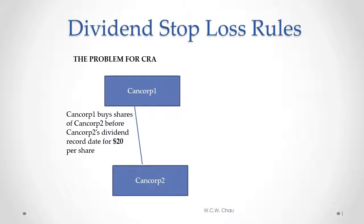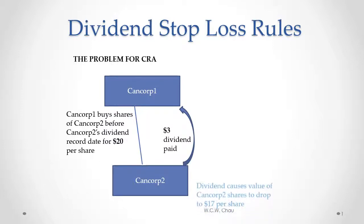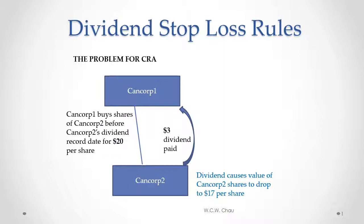That entitles CanCorp 1 to receive a payment of dividends from CanCorp 2. So those CanCorp 2 shares are bought for $20 per share. CanCorp 2 then pays a $3 dividend to CanCorp 1 — $3 per share — and that payment causes the value of CanCorp 2 shares to drop by $3, down to $17 per share.